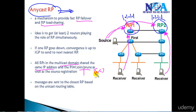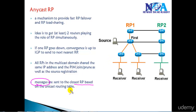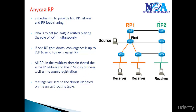The RPs maintain common information between them. Sources and receivers join the nearest possible RP, and messages are sent to the nearest closest RP based on the unicast routing table. Ultimately, two or more RPs are assigned the same IPv4 address.